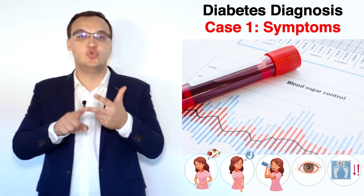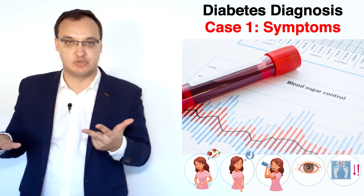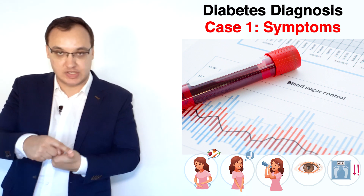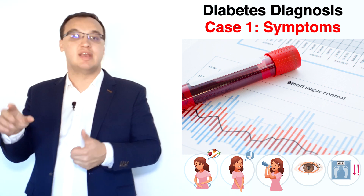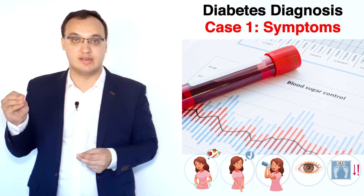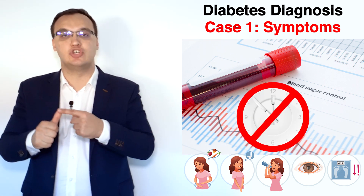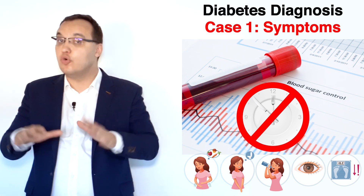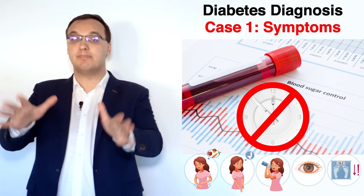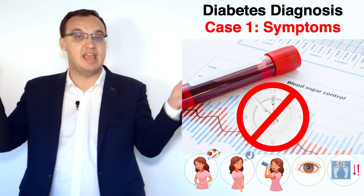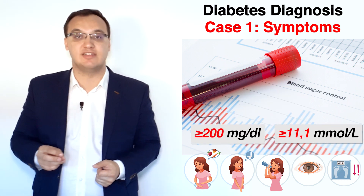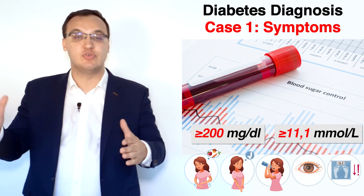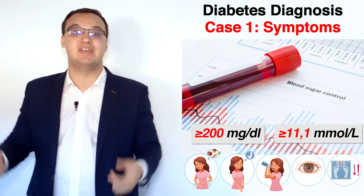So there are three options for diagnosis: one with symptoms, and two without symptoms. The one with symptoms — symptoms together with a random blood glucose — is the most convenient because it's random. The patient does not have to fast. We just take a simple blood sample anytime during the day, and if it's more than 200 mg/dL or more than 11.1 mmol/L together with symptoms, we have a definitive diagnosis.